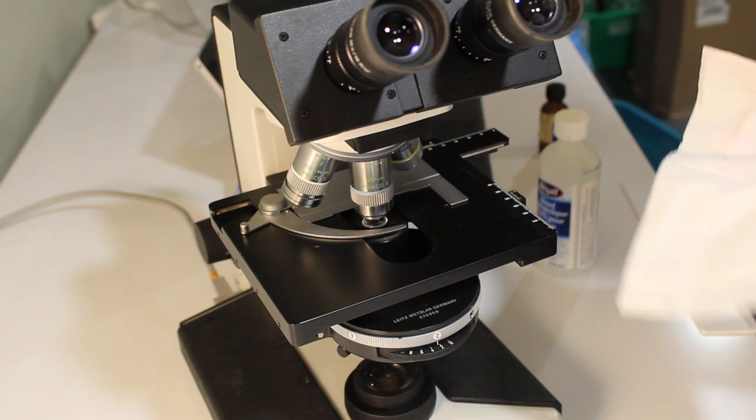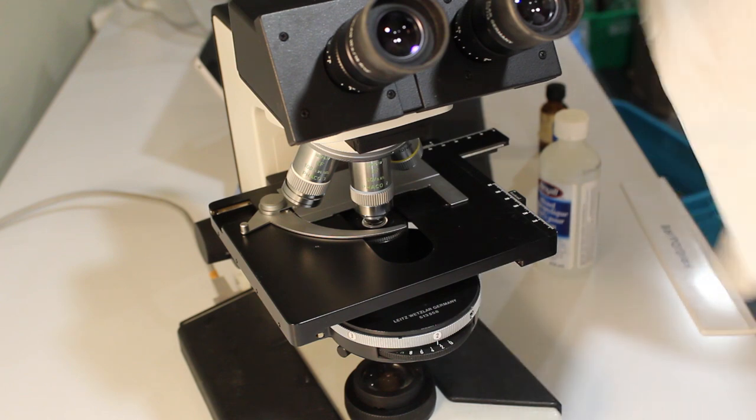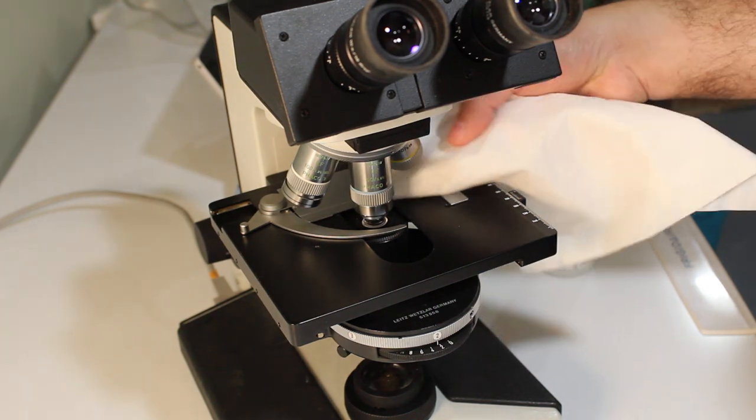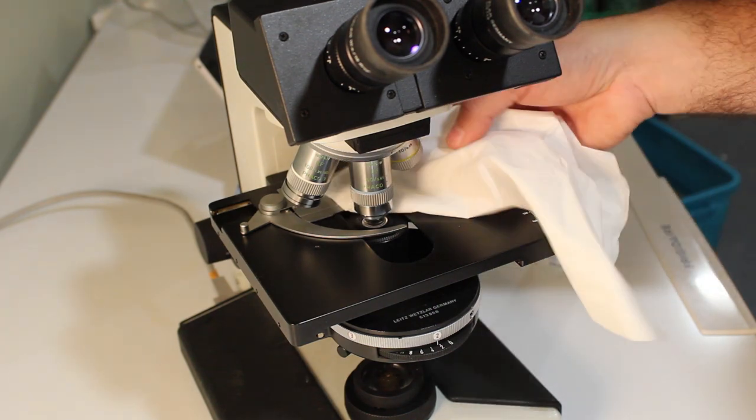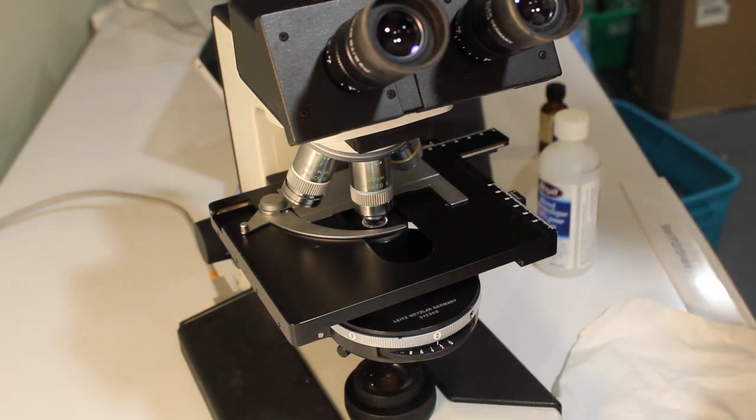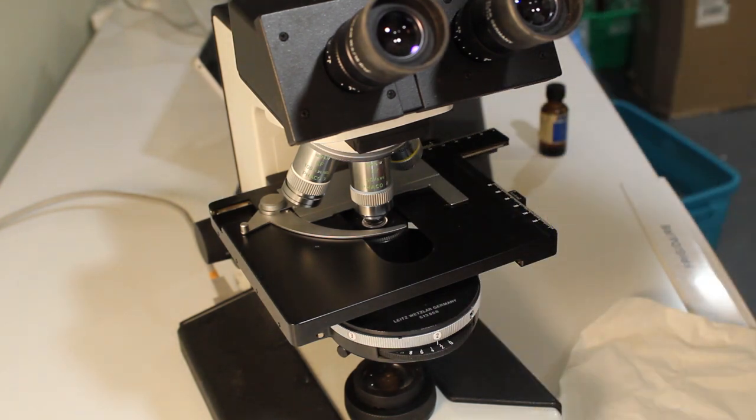Then, using ideally lens paper, but if not a lotion-free tissue will do, dab that lens repeatedly until oil no longer comes off the lens, each time using a clean part of that tissue.